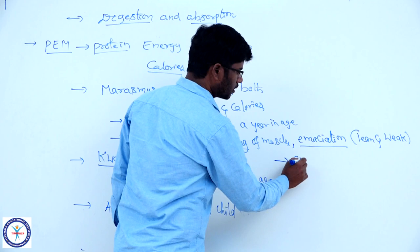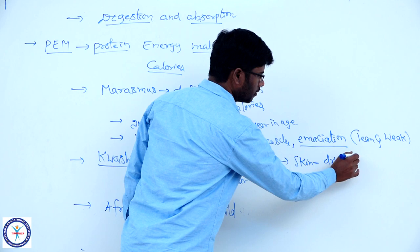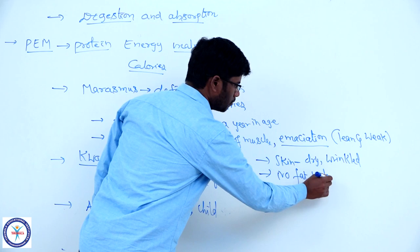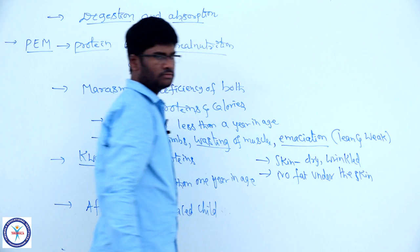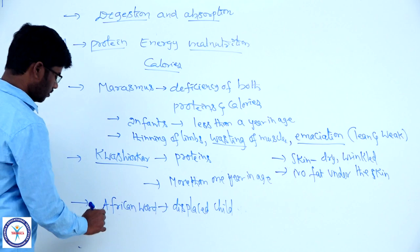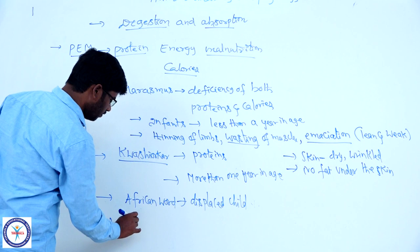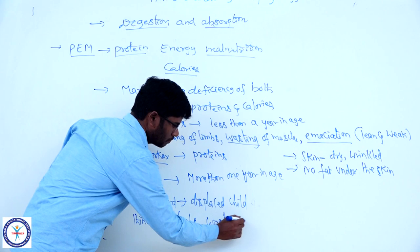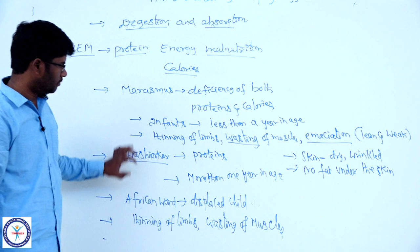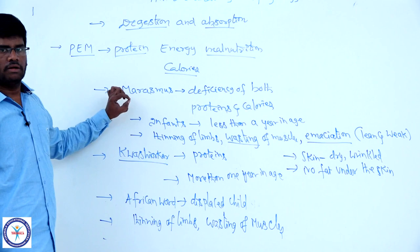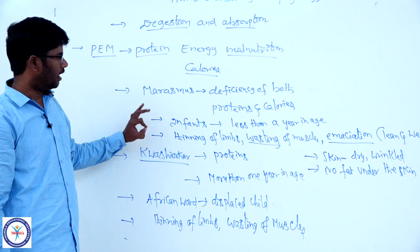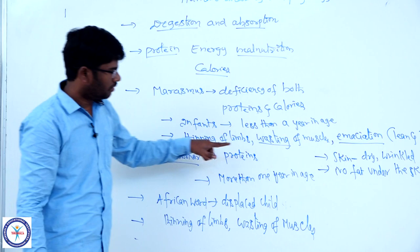In kwashiorkor, like marasmus, common symptoms include thinning of limbs and wasting of muscles. One more common symptom in both marasmus and kwashiorkor is that brain development is affected — there is poor growth of the brain and mental faculties are disturbed, meaning there is no proper memory, reason, and perception.